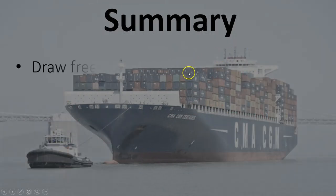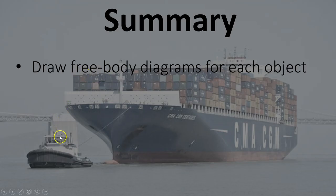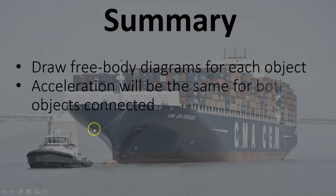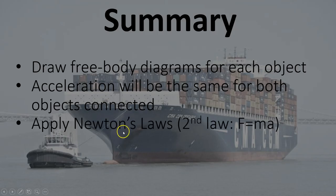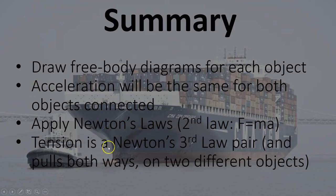To summarize: when you've got connected objects, you should draw free body diagrams for each object to consider the force on that object. Remember, the acceleration will be the same for both objects that are connected. You can apply Newton's laws — and often the second law, F equals ma — to either of the two objects, or both combined. The tension in a cable is a Newton's third law pair, and it pulls both ways on two different objects.